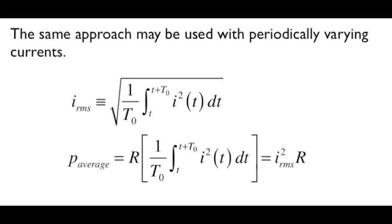The same approach can be used with periodically varying currents. The rms of the current is the square root of the mean of the square of the current, and if that current is flowing through a resistor, the power absorbed in the resistor is equal to the rms current squared times the resistance.